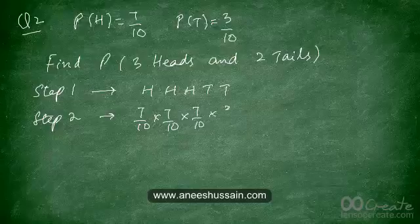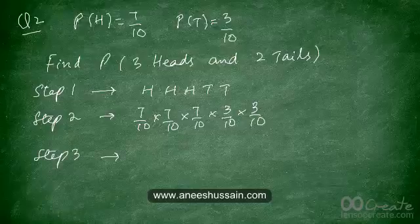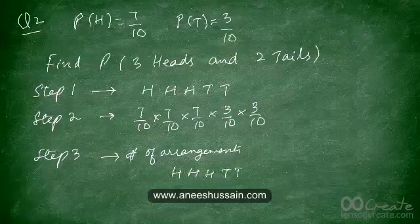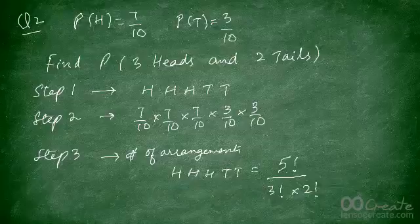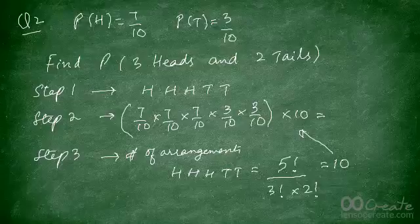Step two: find the probability of this outcome — 7/10 for the first head, 7/10 for the second head, 7/10 for the third head, then 3/10 for the fourth toss being a tail, and 3/10 for the last being a tail. This is just one way to get three heads and two tails, but since the order was not specified, we must also figure out all the different arrangements. The number of arrangements of H, H, H, T, T is 5! divided by 3! × 2!, which simplifies to 10.